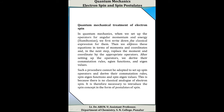Next, we study the quantum mechanical treatment of electron spin. In quantum mechanics, we first set up the operators for angular momentum and energy by writing the Hamiltonian — first in classical mechanical form, then replacing with appropriate quantum mechanical operators. However, such a procedure cannot be adopted to set up spin operators, their commutation rules, spin eigenfunctions, and spin eigenvalues, because there is no classical analog of the electron spin.